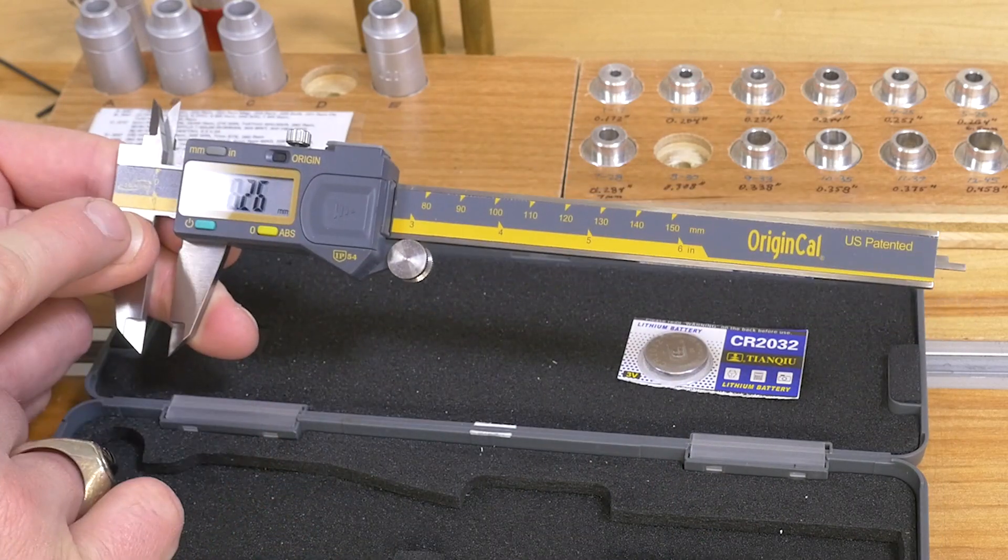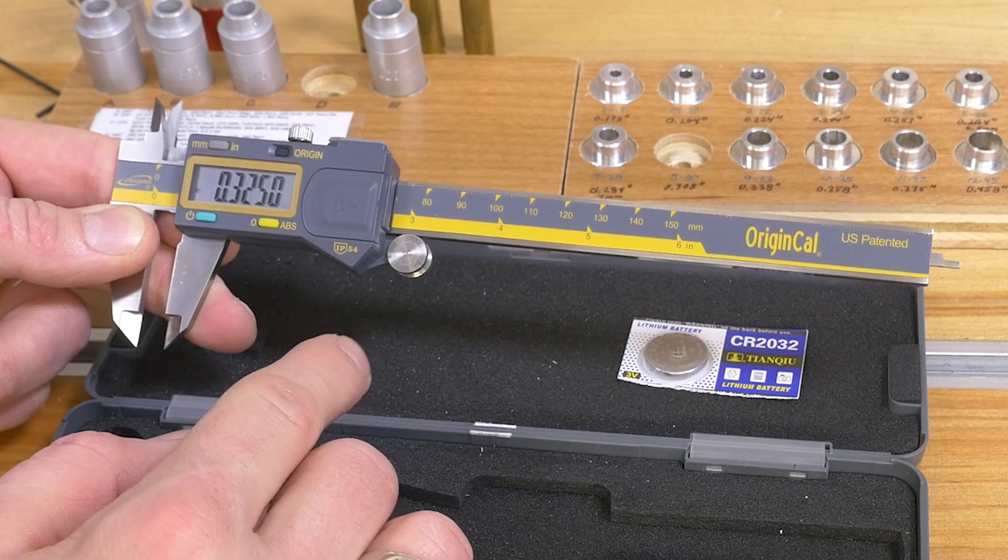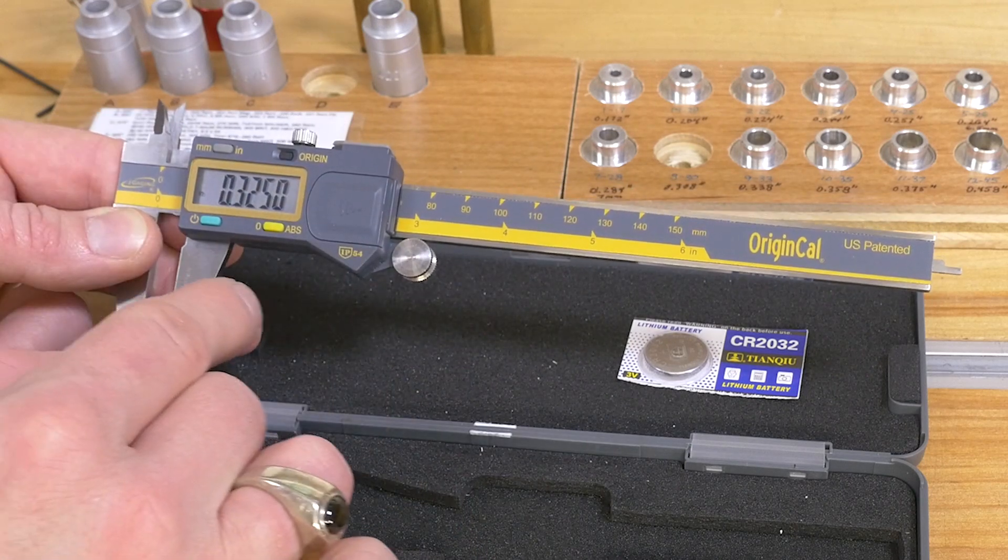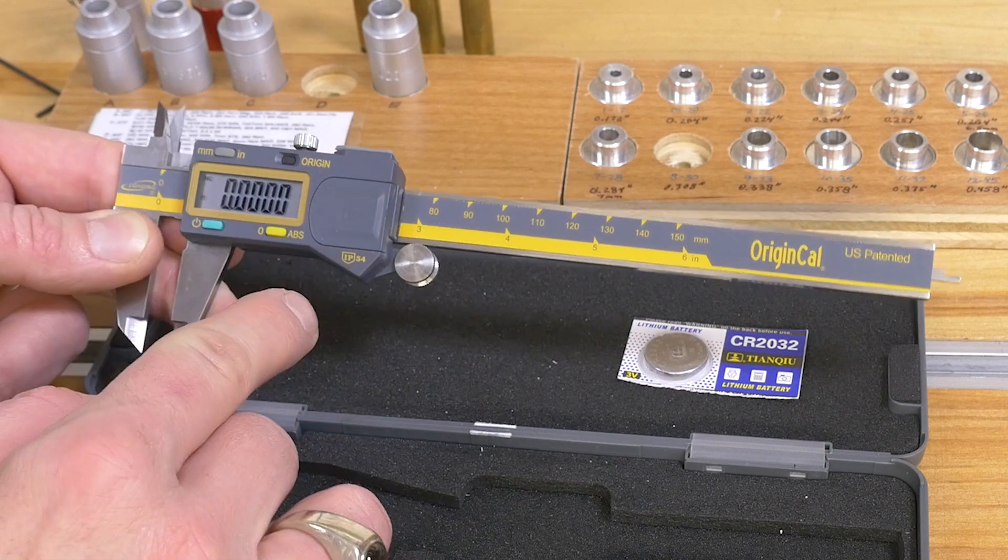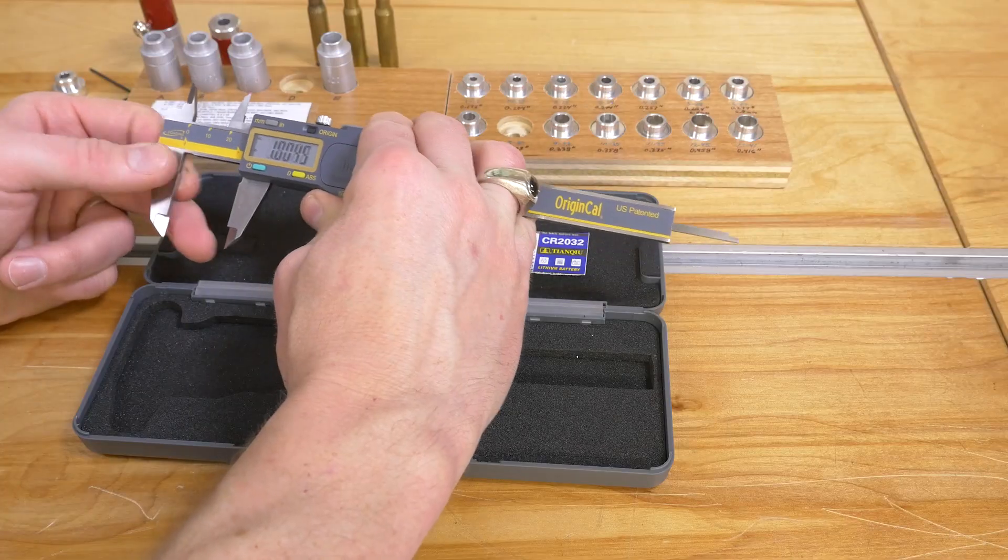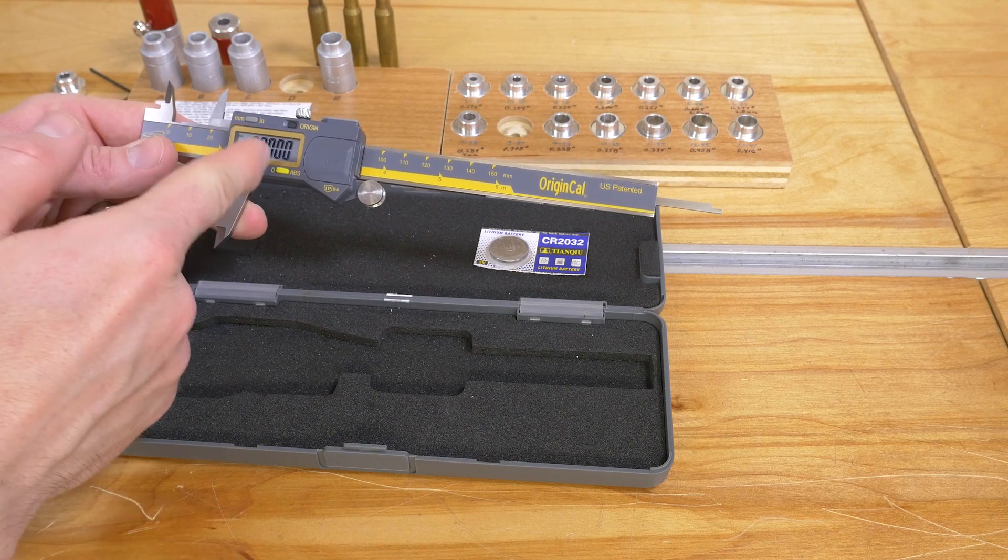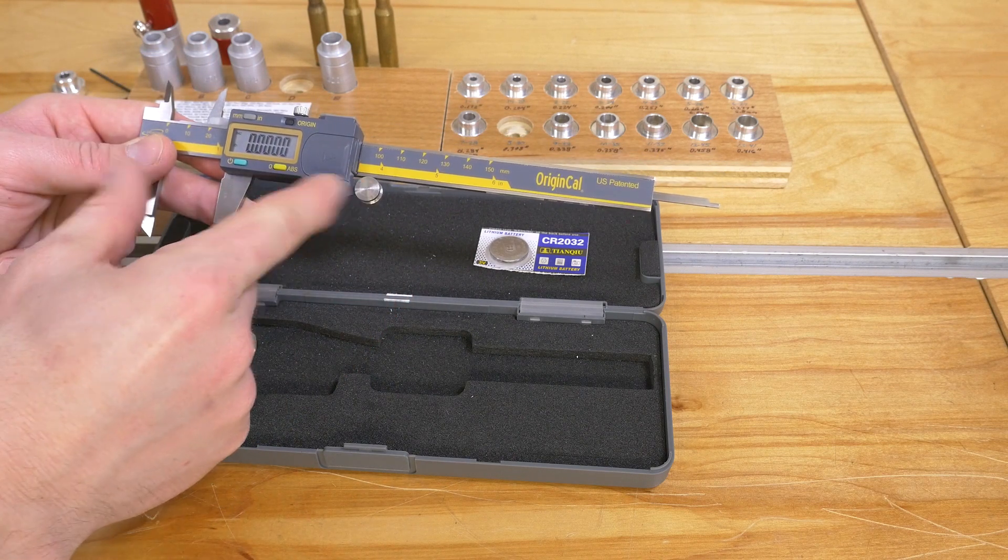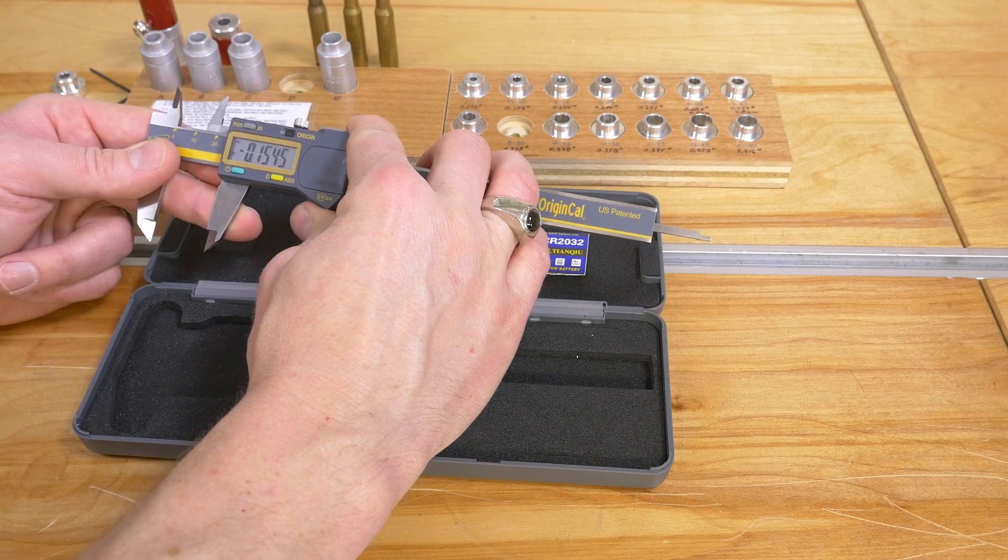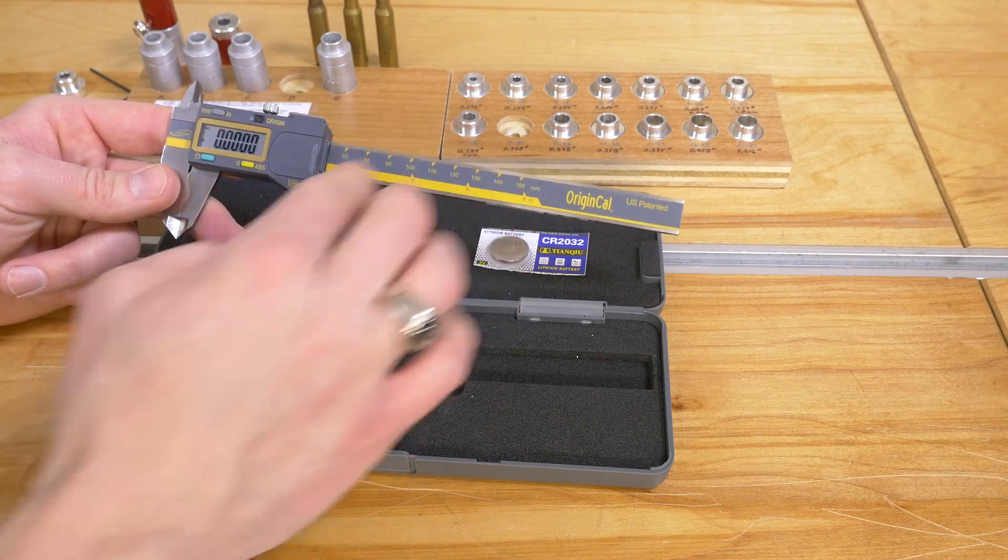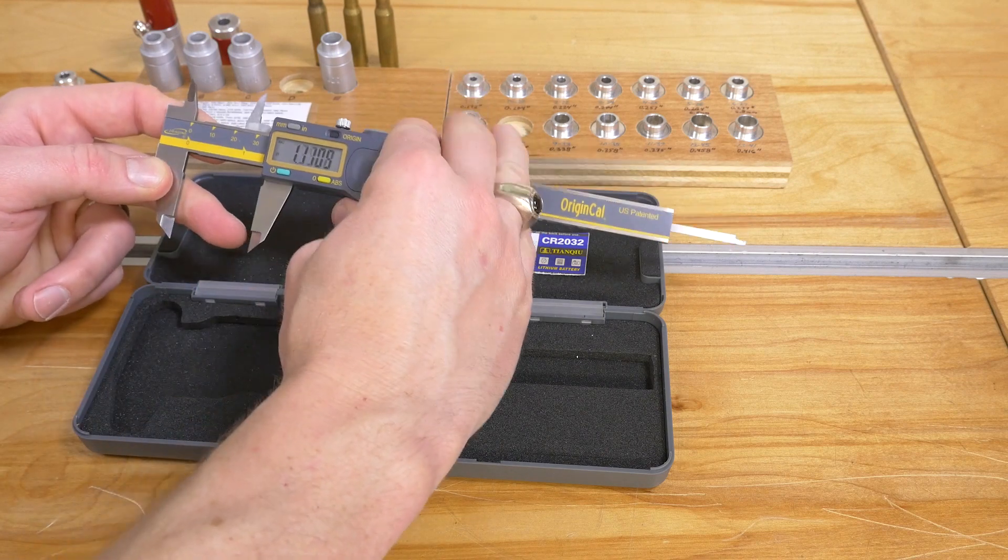We can switch between inches and millimeters. We can switch between absolute, which means relative to an exact measurement, or a relative measurement. So if we open this up, we can hit zero abs and zero it out at a particular datum point. Now we're measuring relative to that measurement. Go back to zero, hit absolute, we're back in an absolute measurement.